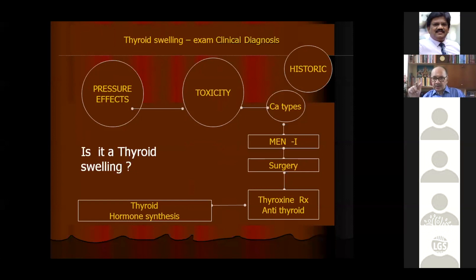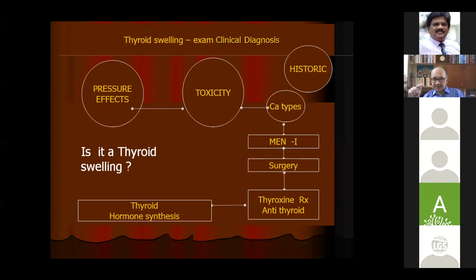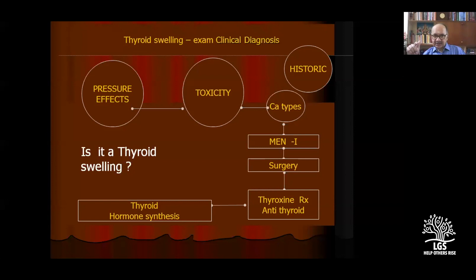The first thing is: is it a thyroid swelling at all? When the patient swallows, the thyroid moves up and down with the trachea — we call that a thyroid swelling. There are some swellings which do not belong to the thyroid category but also move with deglutition: subhyoid bursitis, laryngocele, infected thyroglossal cysts. But these are all very rare, so people diagnose thyroid swelling fairly easily — it moves up with deglutition.